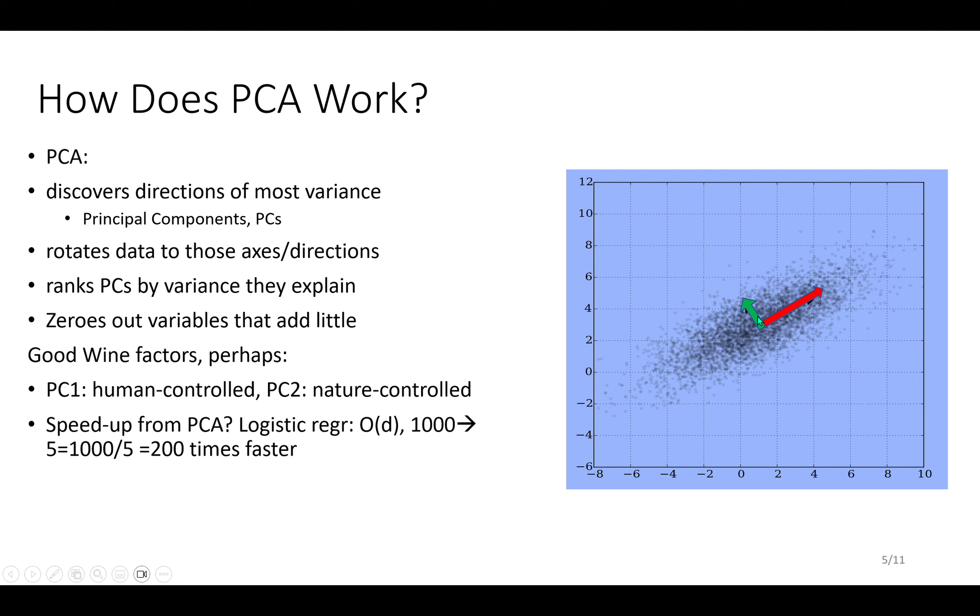The red direction may be perhaps 80% of the variance in the data, and the green may be another 10 or 15%. So already we've got most of the variance in the data just from the first few variables.